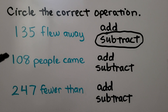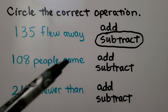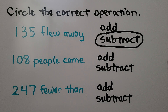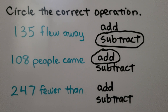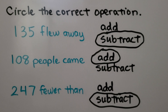Here it says '108 people came.' Do you think we would add or subtract if we saw these words? 'People came' means we are adding people — there are more people. So if you said add, you're correct. What if we see '247 fewer than'? Fewer than tells me we're comparing, and to compare we need to subtract. If you said subtract, you're right.